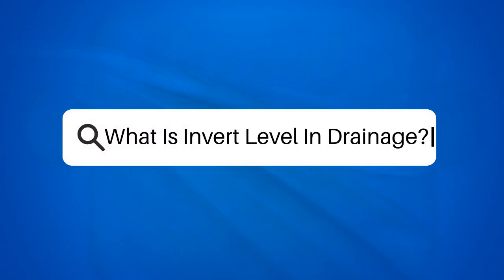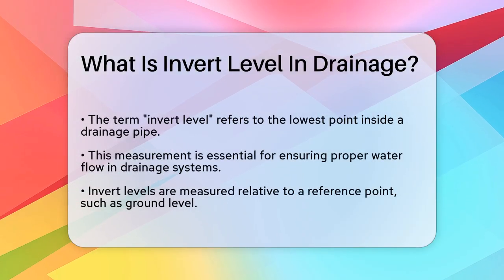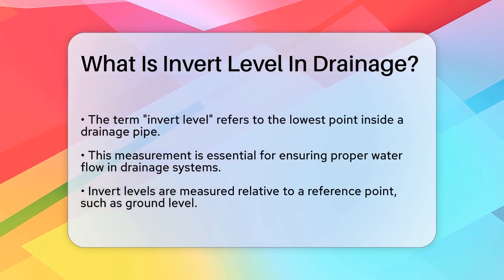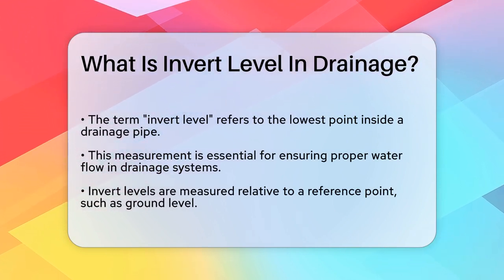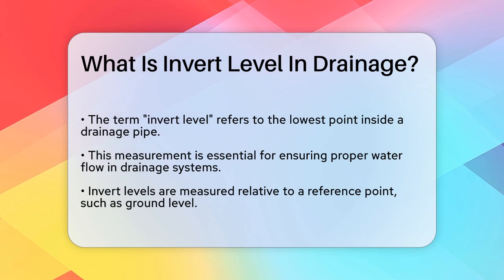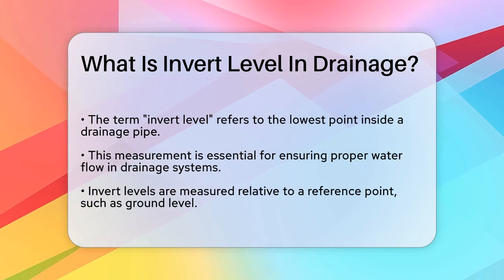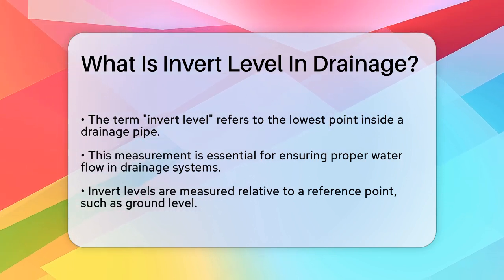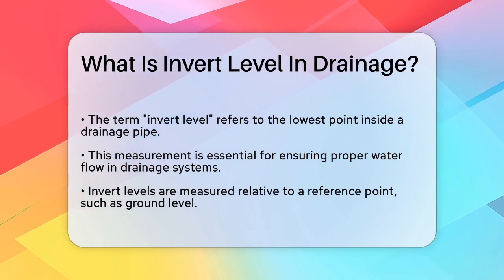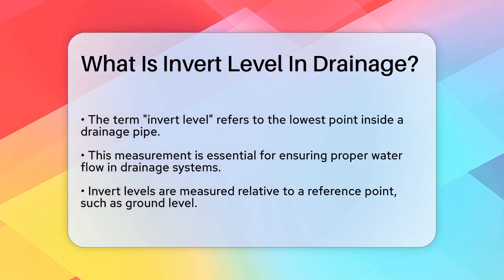What is invert level and drainage? If you're working on a drainage project or just curious about how drainage systems are designed, you might have come across the term invert level. The invert level of a pipe is essentially the lowest point inside the pipe. Imagine looking into a pipe and finding the bottom surface — that's the invert level. This measurement is critical for ensuring that water flows correctly through the drainage system.